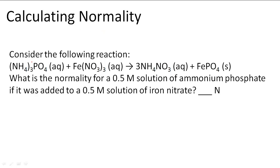Calculating normality. In this problem it says consider the following reaction and it asks us what is the normality of a 0.5 molar solution of ammonium phosphate if it was added to a 0.5 molar solution of iron nitrate.